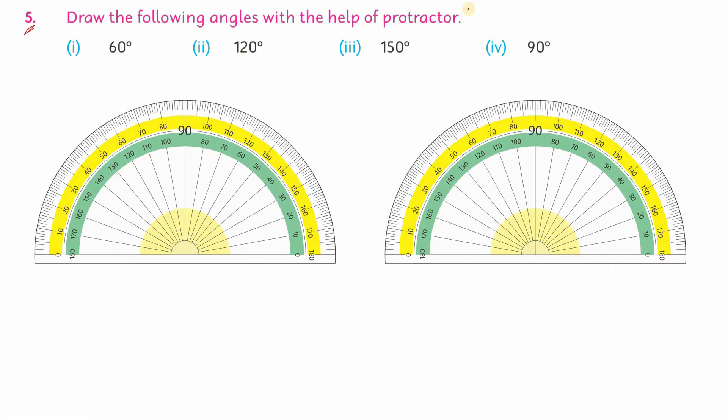Draw the following angles with the help of the protractor. If you look at these protractors, I have two questions here. Look at part 1, the 60 degree angle. What do you do? Draw the angle. This is the point, this is the line.